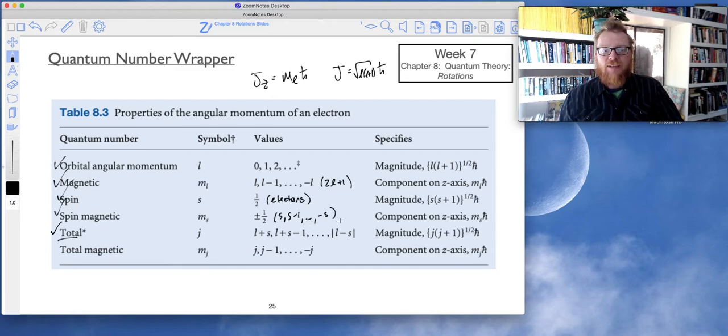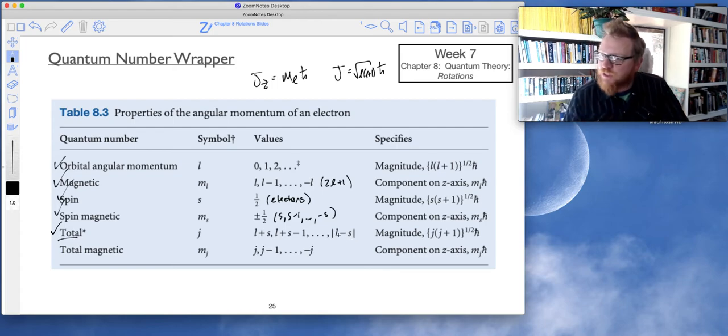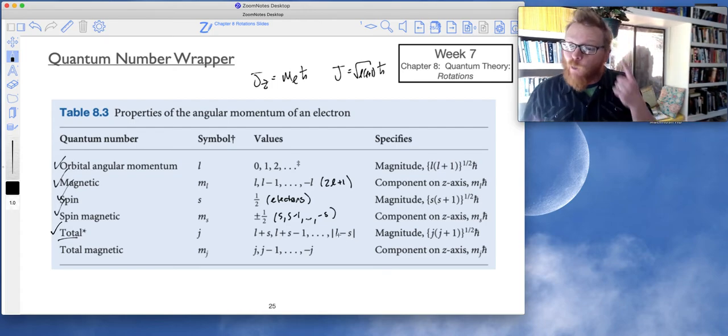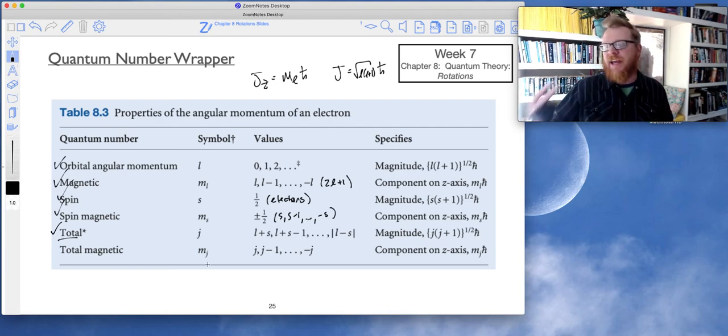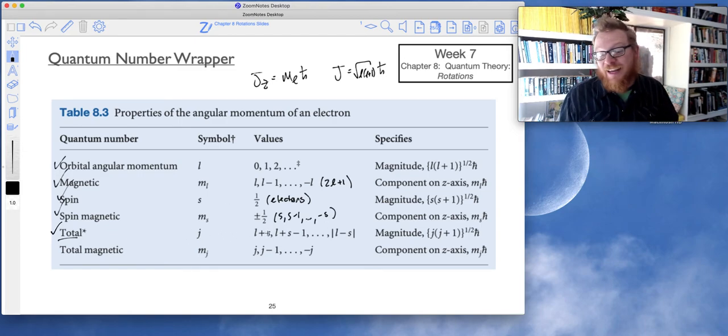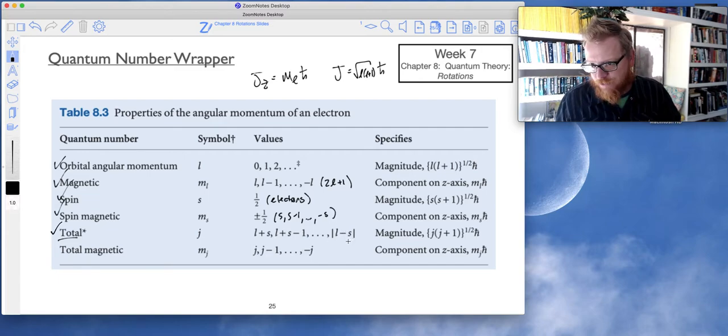Fortunately for us, because electrons only have one quantum number possible which is one half, then when we start putting this quantum number j together which we're going to start doing once we really get into spectroscopy, for us luckily that's going to be very easy. It's always going to be just l plus one half, l plus one half minus one, all the way down to l minus one half.